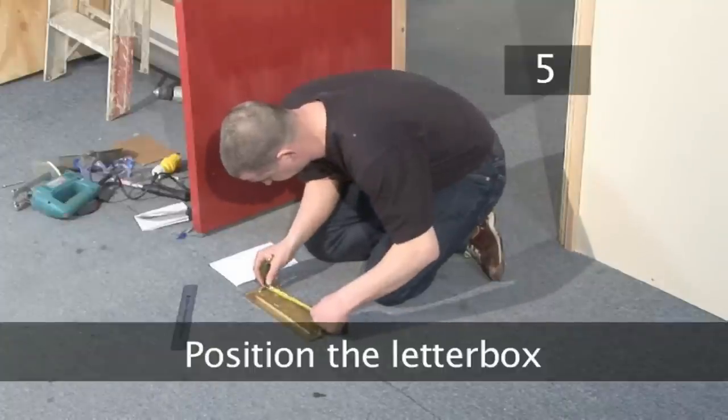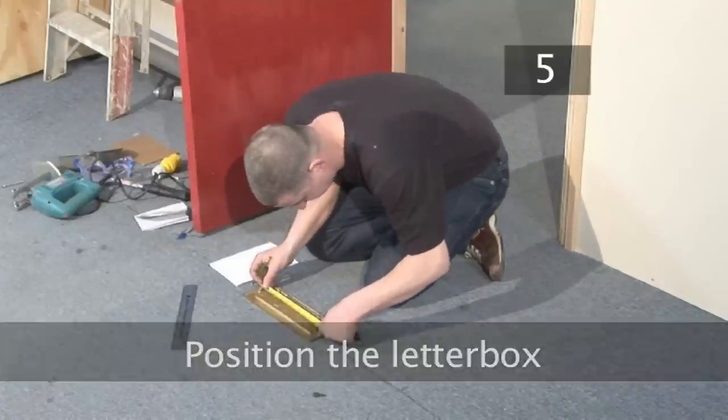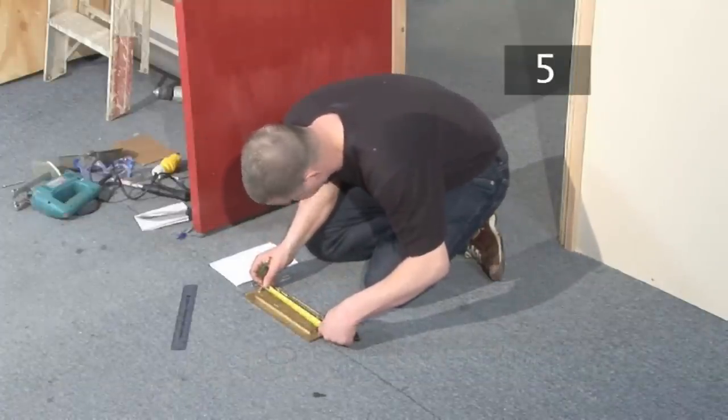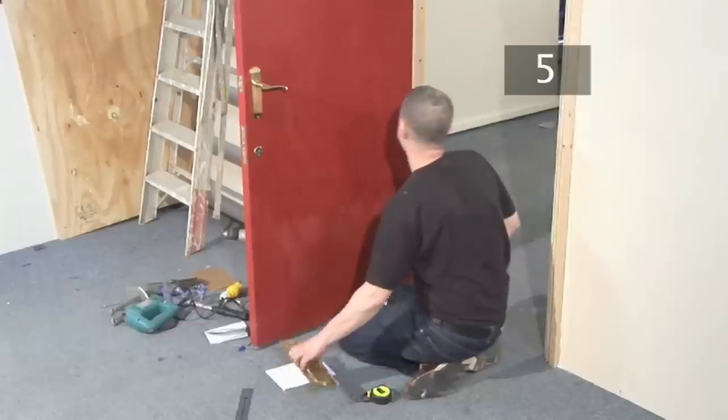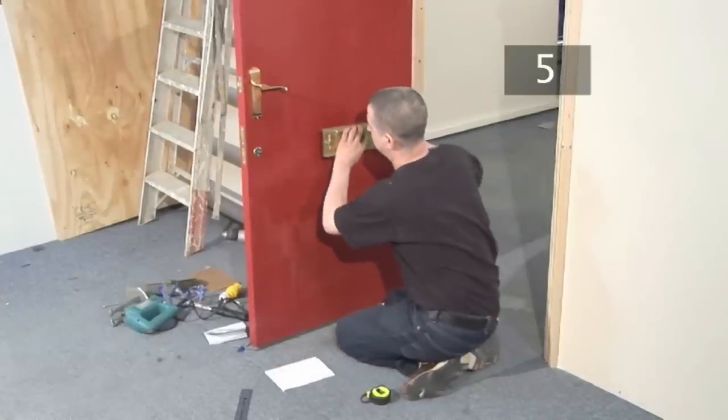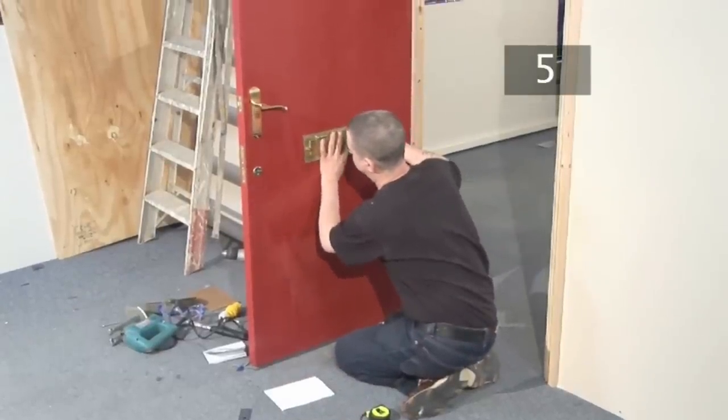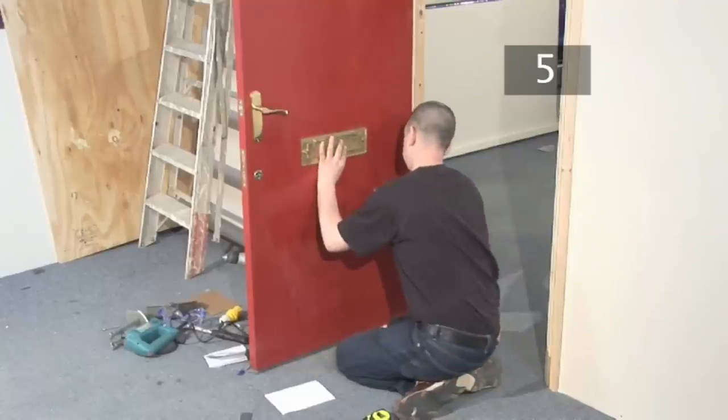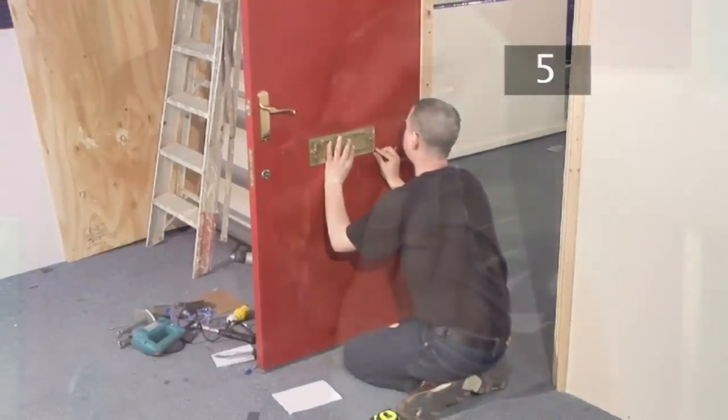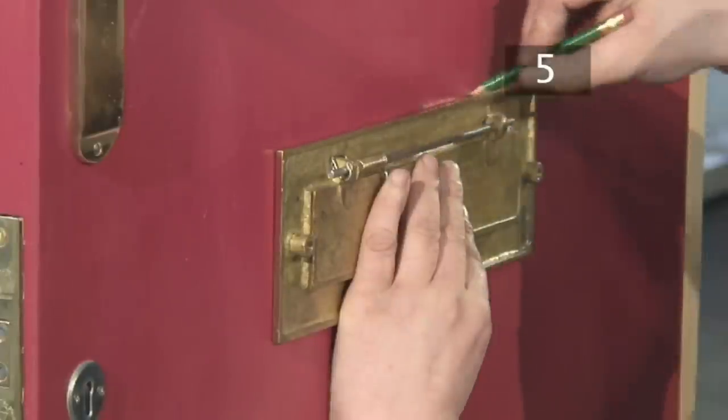Step 5. Position the letterbox. Measure the width of the letterbox, then align the center point of the letterbox with the center point on the door. Make sure that the bottom of the letterbox is in line with your three pencil marks and draw around it with your pencil.